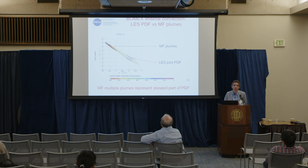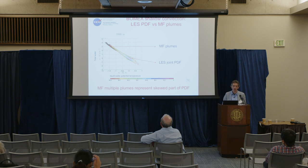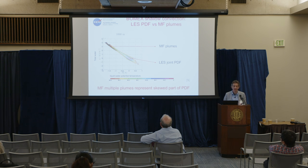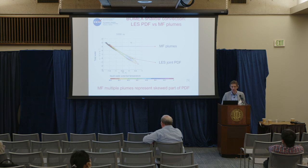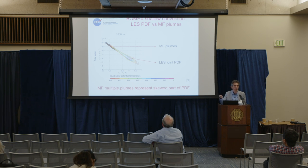Looking again at a cut from the LES at about one kilometer, plotting total water minus mean against liquid water potential temperature minus mean shows two regimes: a Gaussian regime around the mean, and a very positively skewed part of the distribution. Sampling a bunch of plumes over about 30 minutes and plotting their properties at that level, the plumes actually occupy exactly this skewed space in the diagram — precisely where they need to be to produce the mixing that they do. The multiple plumes really do represent this skewed part of the distribution.